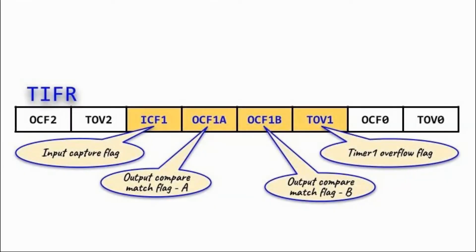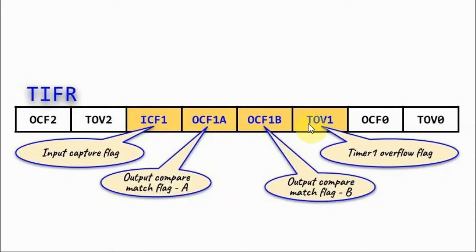Timer 1 has four flags inside the Timer Interrupt Flag Register: the timer overflow flag, the output compare flag for Channel B, the output compare flag for Channel A, and the input capture flag. In this video we'll be focusing on the timer overflow flag, which will be set when the count value exceeds 65535.